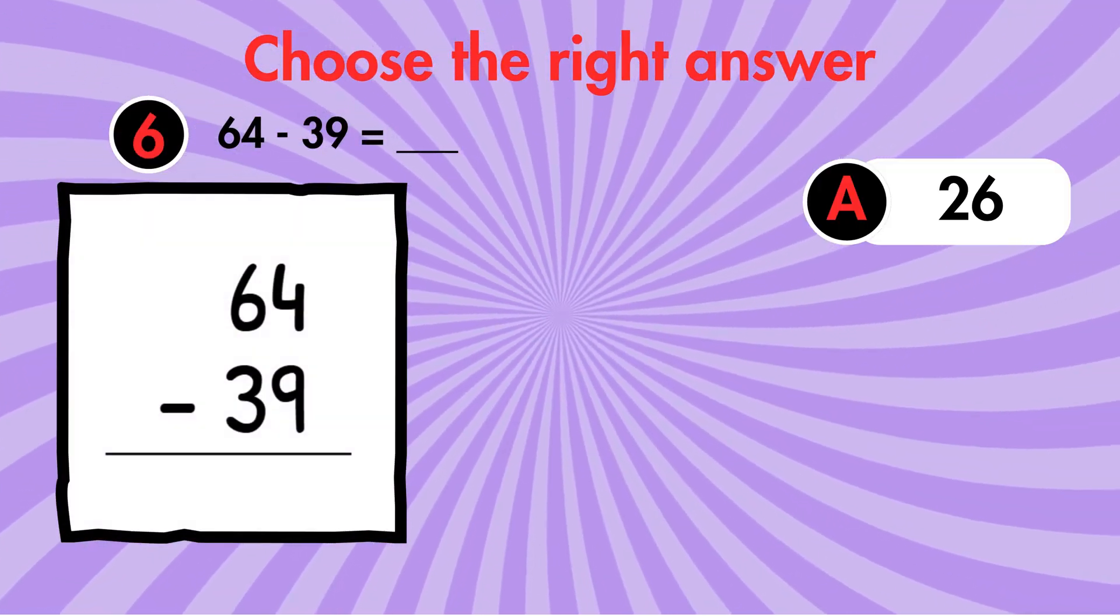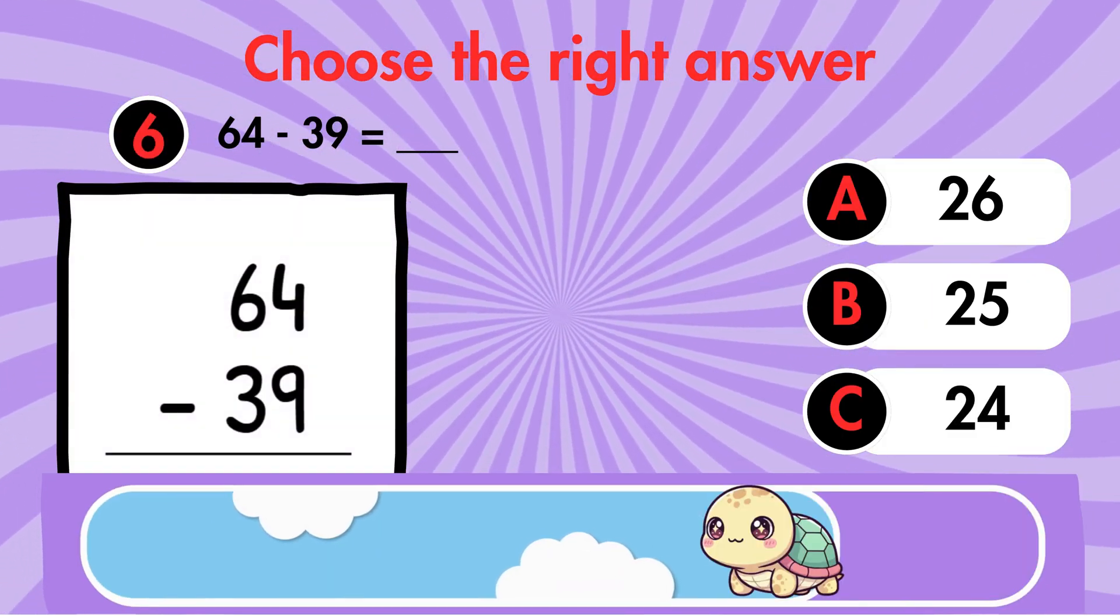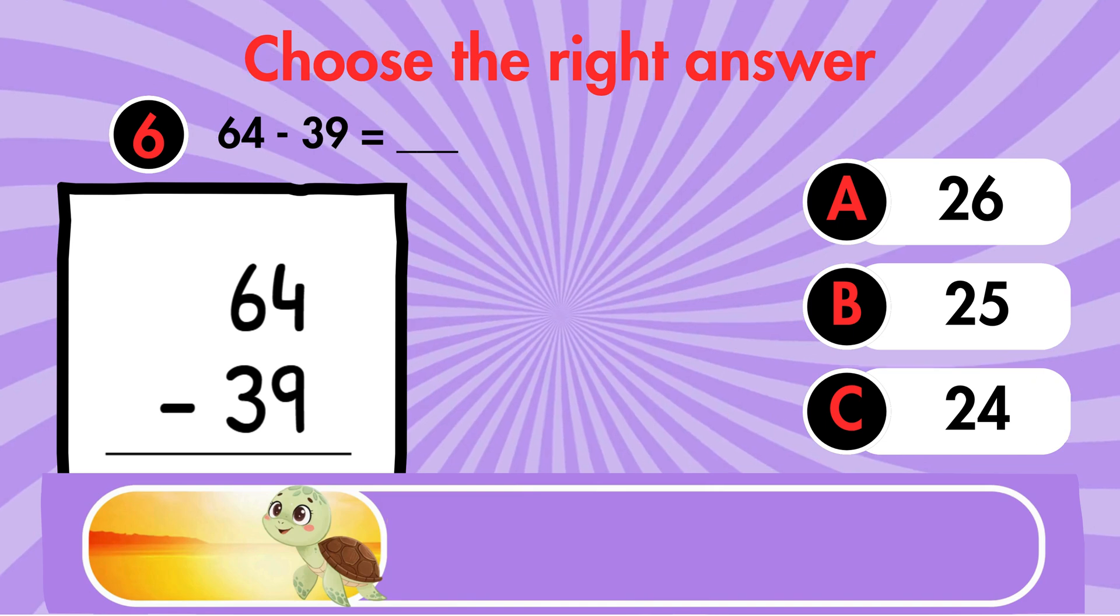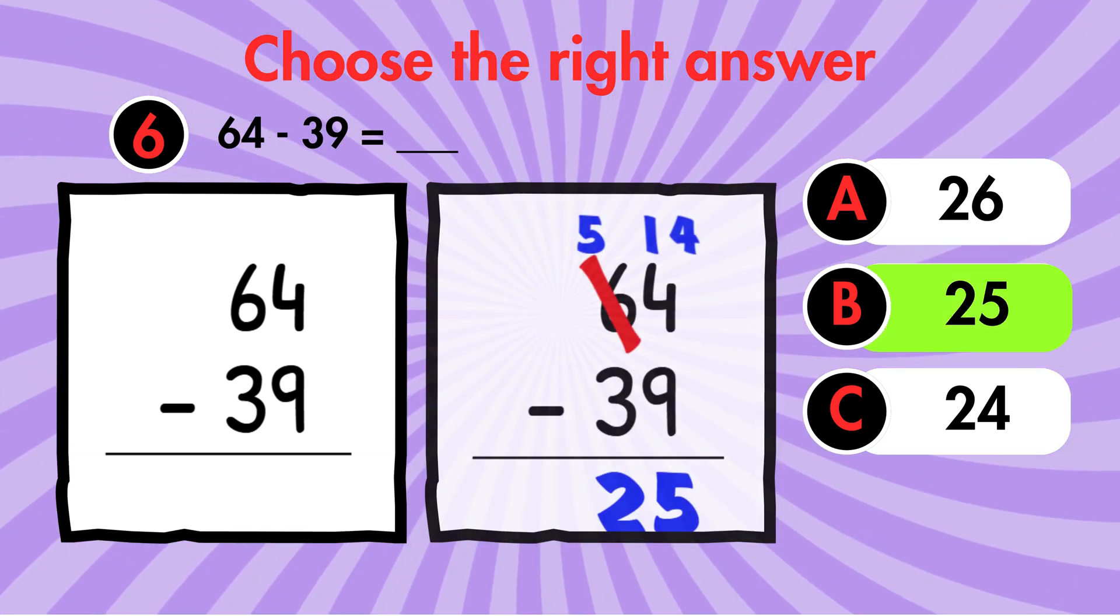Question 6. 64 minus 39 equals what? Answer 25.